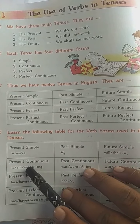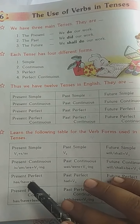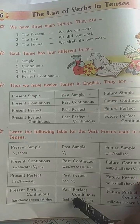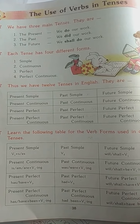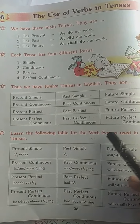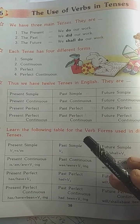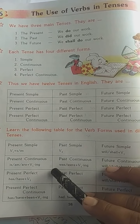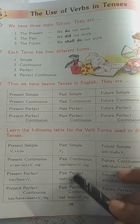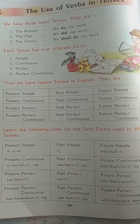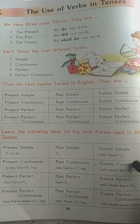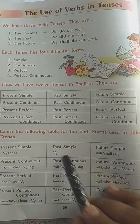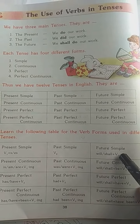Past tense mein V1 ki jagah V2 aayega. Am/is/are ki jagah was/were aayega. Have/has ki jagah had aayega. Past perfect continuous mein bhi had plus been waise ka waisa. Future mein am/is/are ki jagah will/shall aayega — kyunki humne pichle lesson mein padha: am/is/are present mein, was/were past mein, will/shall future tense mein use karte hain.